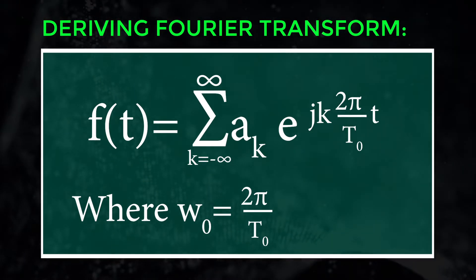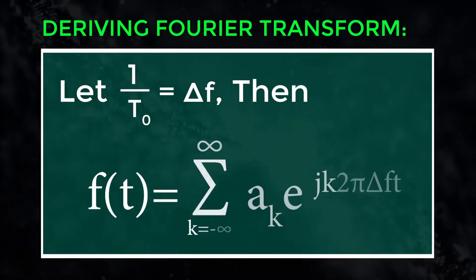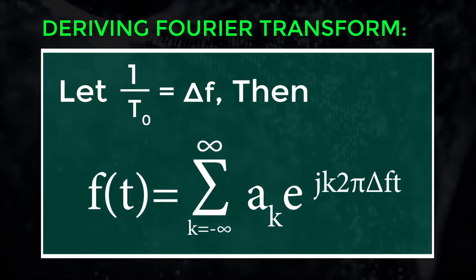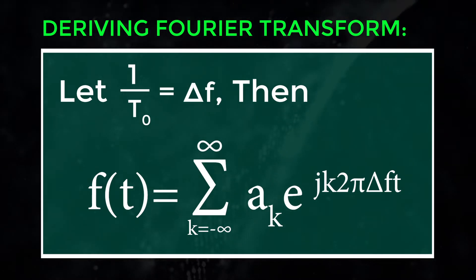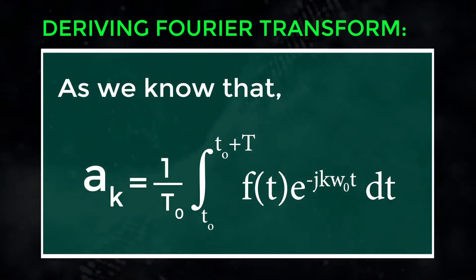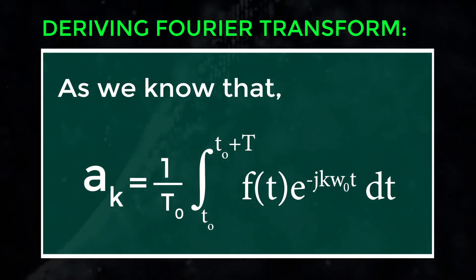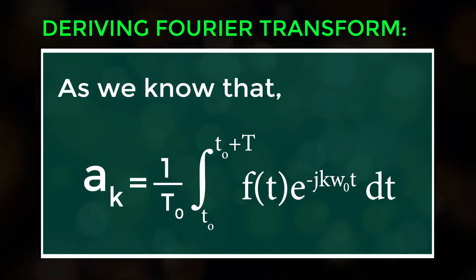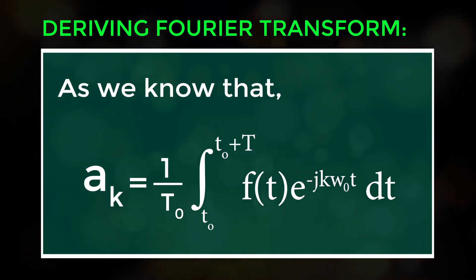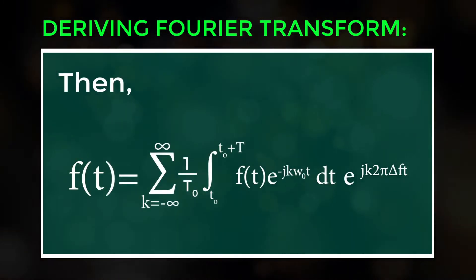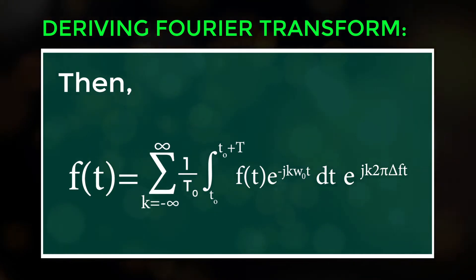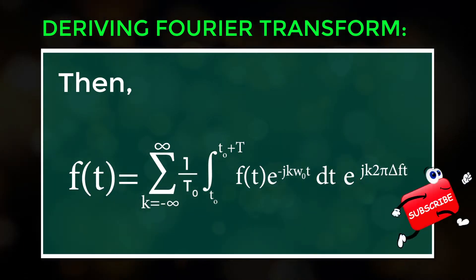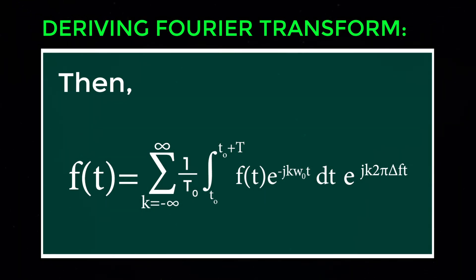Let 1/T₀ = Δf. Then f(t) = Σ (k = -∞ to ∞) of aₖ · exp(j·k·2π·Δf·t). As we know, aₖ = (1/T₀) · ∫ f(t) · exp(-j·k·ω₀·t) dt. Substituting, f(t) = Σ (k = -∞ to ∞) of (1/T₀) · ∫ f(t) · exp(-j·k·ω₀·t) dt · exp(j·k·2π·Δf·t).